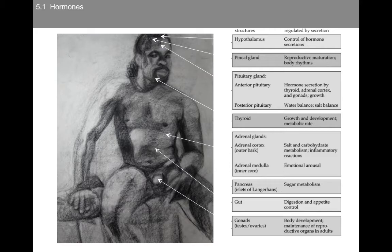We're also going to talk about the pancreas, which is important for sugar metabolism; the gut, which is important for digestion and appetite control — it has a key role in how we feel, actually. We talked about how 90 percent of serotonin is actually in the gut, so you can probably see what an impact the gut has on the way that we feel emotionally. And then finally, the gonads, which play a key role in body development and the maintenance of reproductive organs in adults.